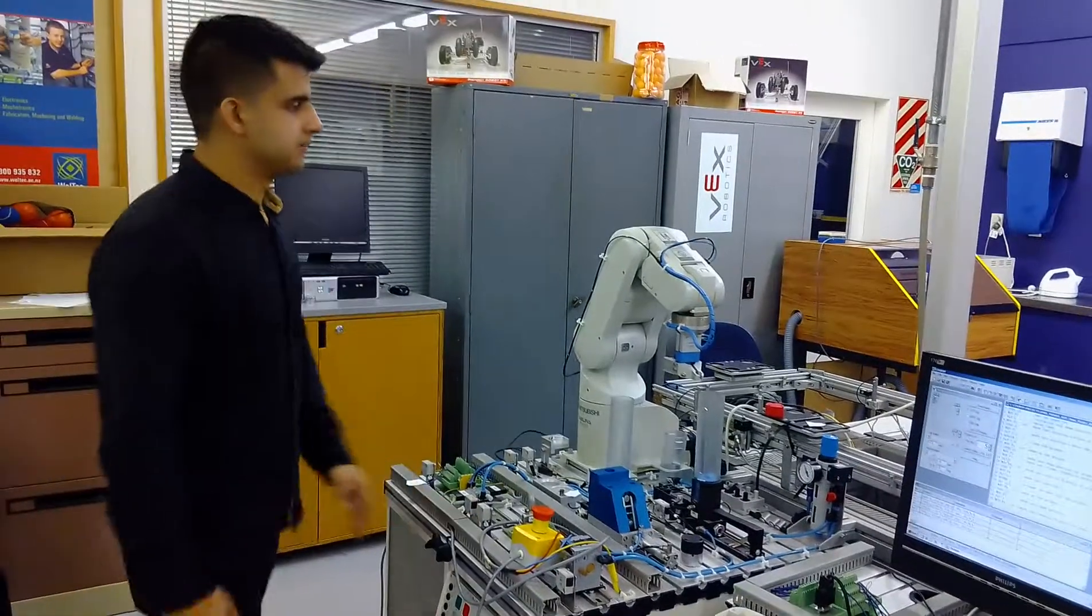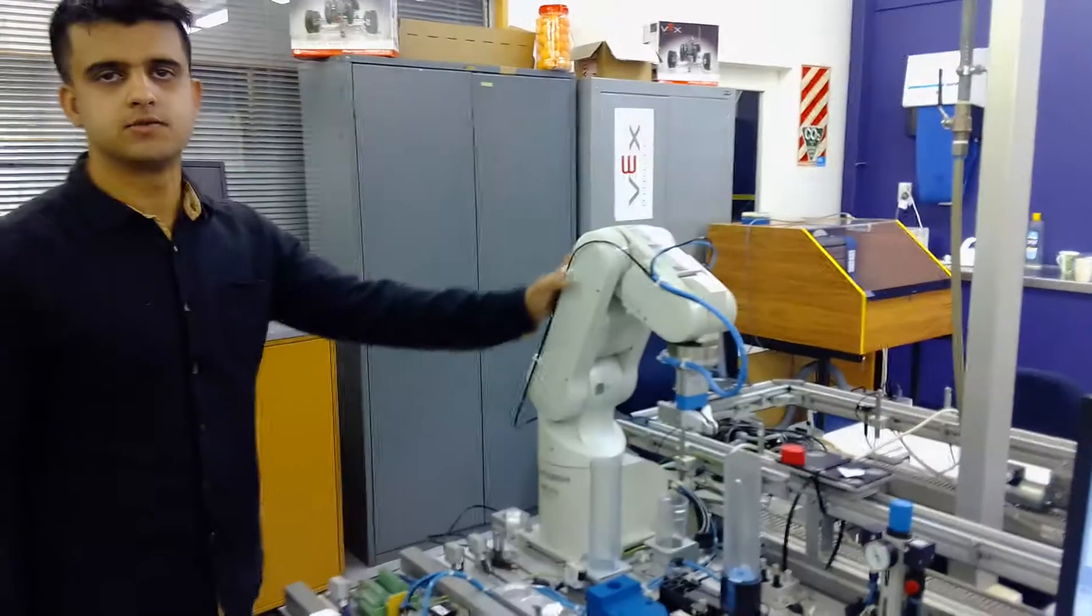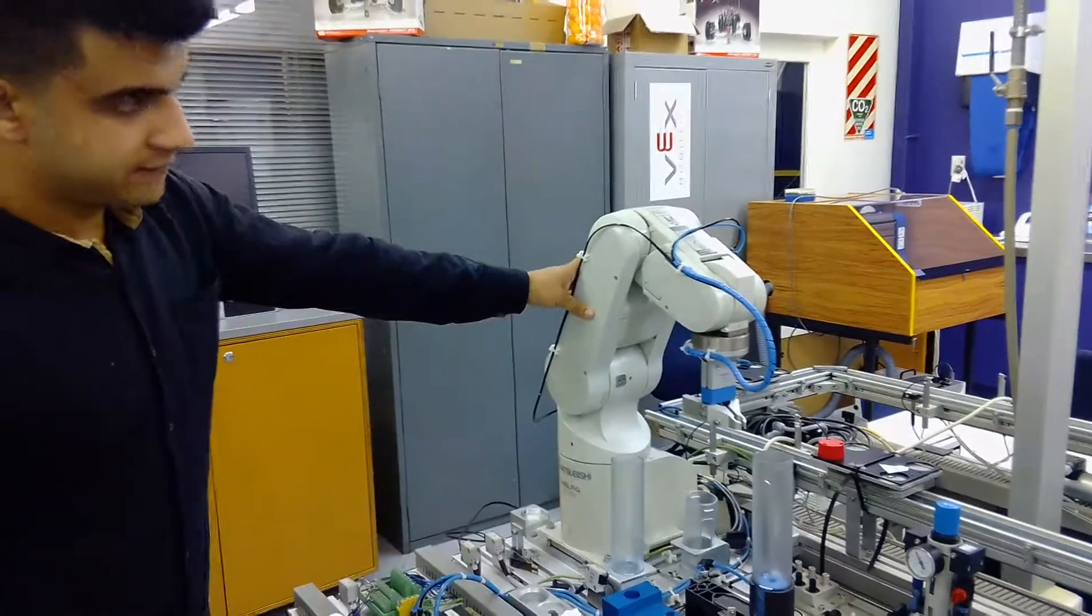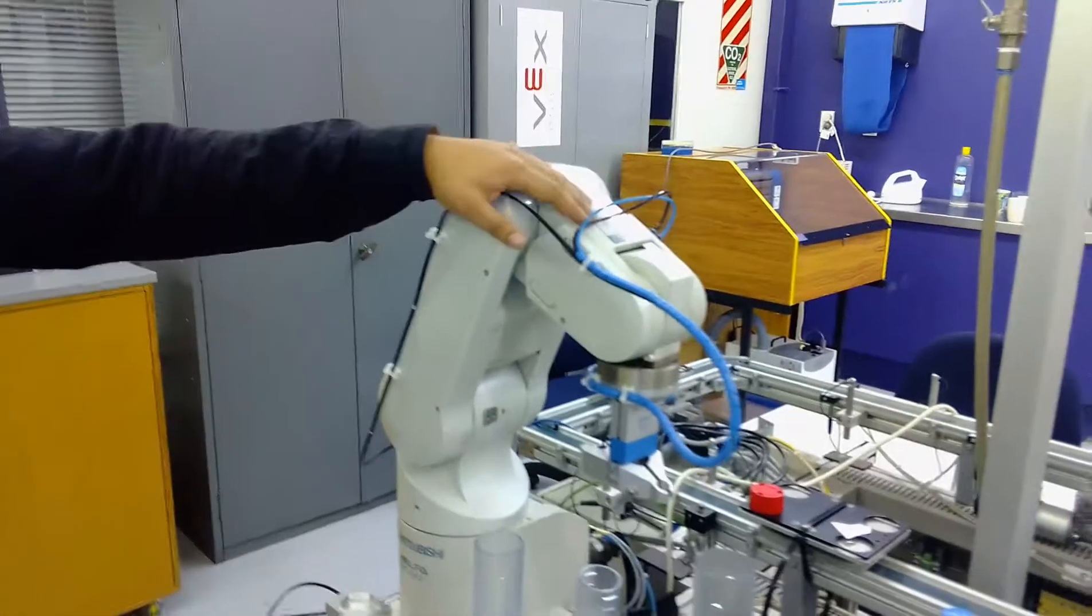So basically I will explain what are the links of this robot. This basically has 5 links: link 0, link 1, link 2, link 3, and link 4.